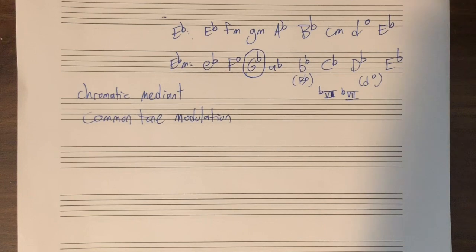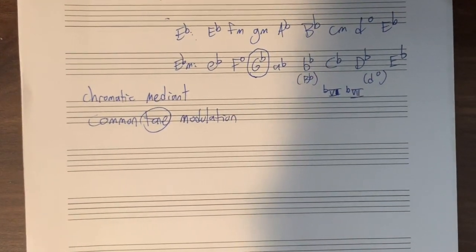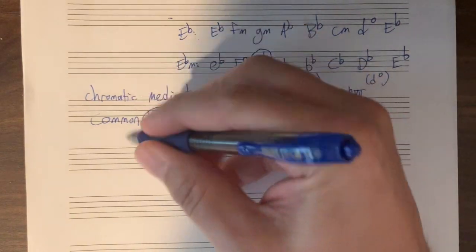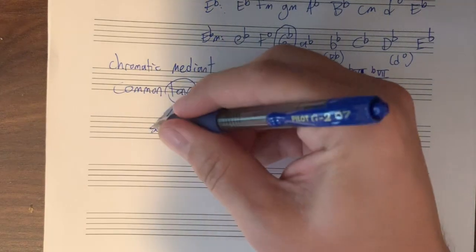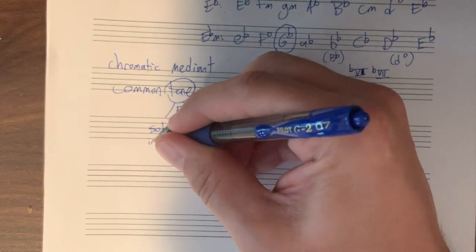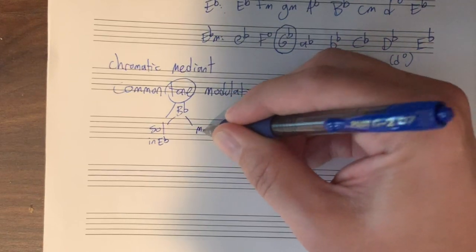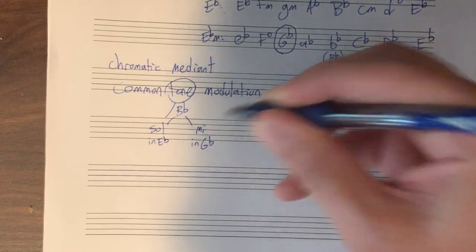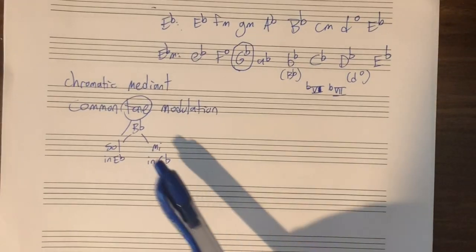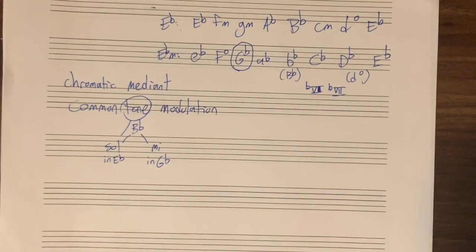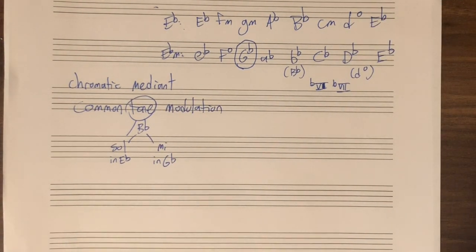What it definitely does is get us right to the heart of what common tone modulation is all about. In a common tone modulation, you have a note that has one role in one key. In our case, the B flat is 'sol' — scale degree five — in the key of E flat. But that same B flat is 'mi' in the key of G flat, which is the key we are modulating to. And that is the connection between these two very foreign keys.